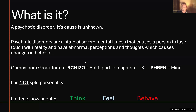So let's talk about Schizophrenia. What is it? Schizophrenia is a psychotic disorder; causes unknown. Psychotic disorders are a state of severe mental illness that causes a person to lose touch with reality and have abnormal perceptions and thoughts, which causes changes in behavior. It comes from the Greek term schizo, which means to separate, split, to part, and the word phrenia, which means mind. The medical society uses phrenia as a suffix, and they deem that meaning distorted mind or scattered mind.